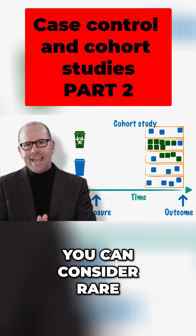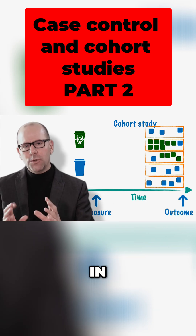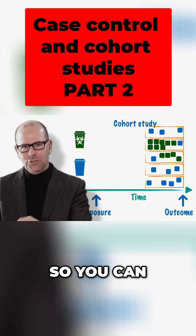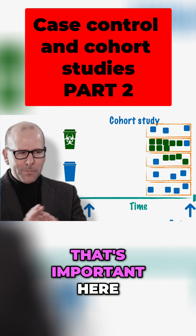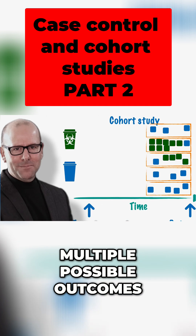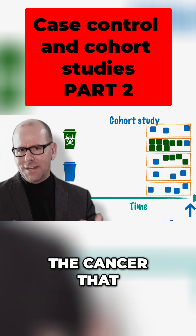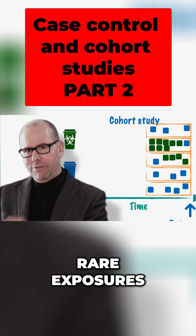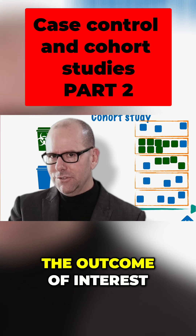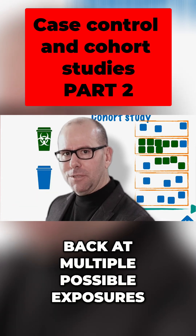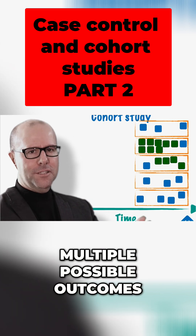What's important about this is that you can consider rare exposures. There might just be a handful of people from all over the world who are drinking water with that particular mineral in it. So you can find very rare exposures, follow them over time, and look at the outcomes. The other thing that's important is that you can look at multiple outcomes — multiple possible outcomes, like whether this mineral made their hair grow faster, or affected height, or caused cancer in this group. So in a cohort study, we can look at rare exposures and look for multiple possible outcomes. This is an important difference compared to case-control studies, where our starting point was the outcome of interest, allowing us to look at rare outcomes and multiple possible exposures.